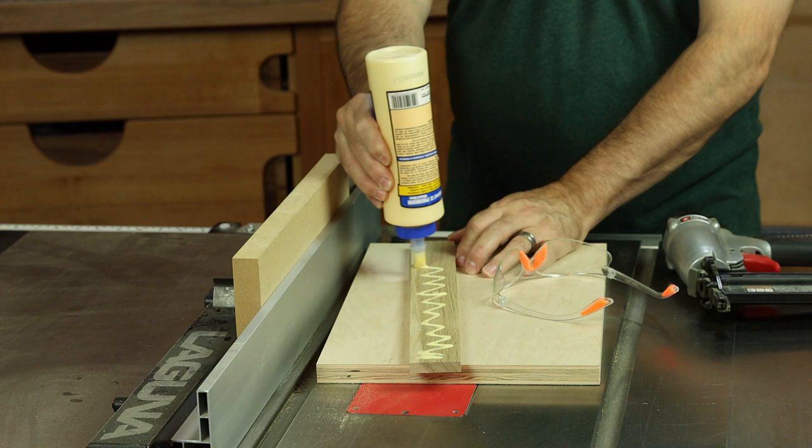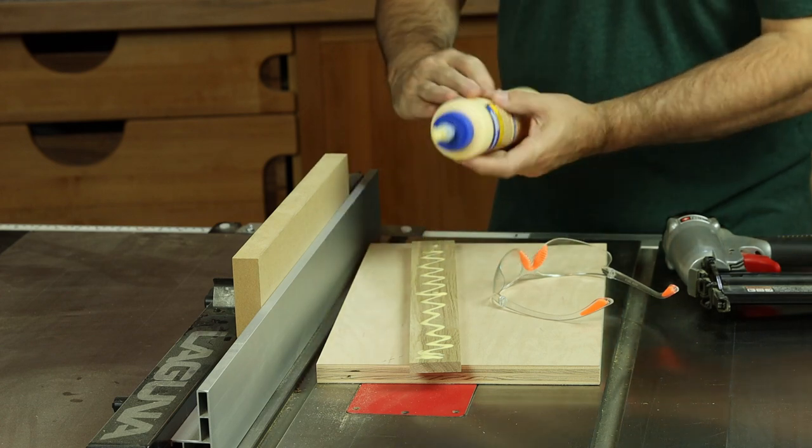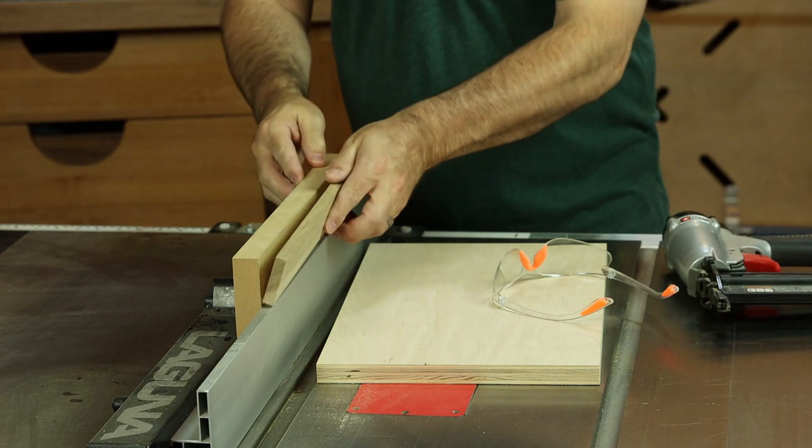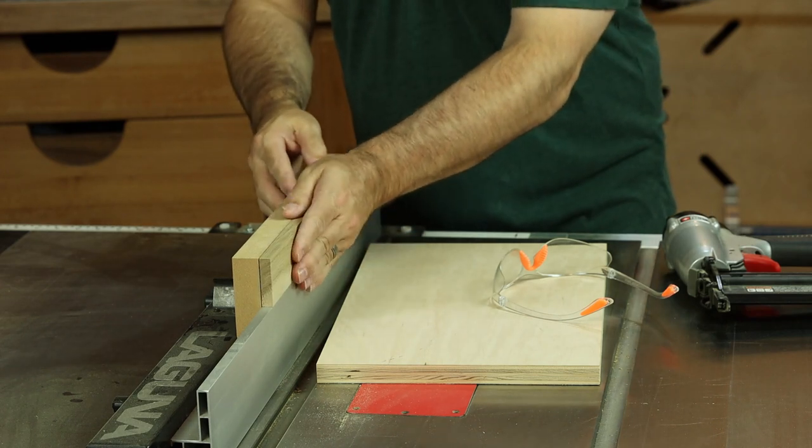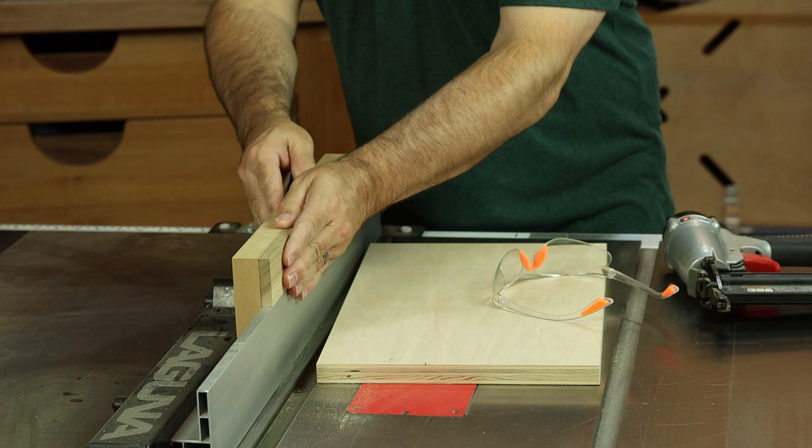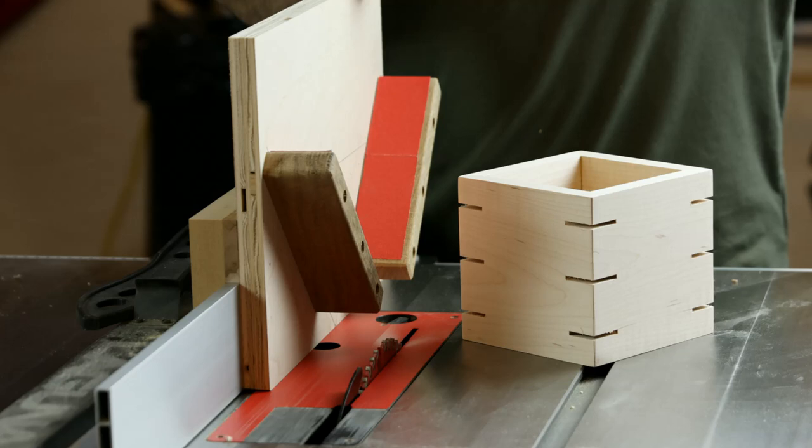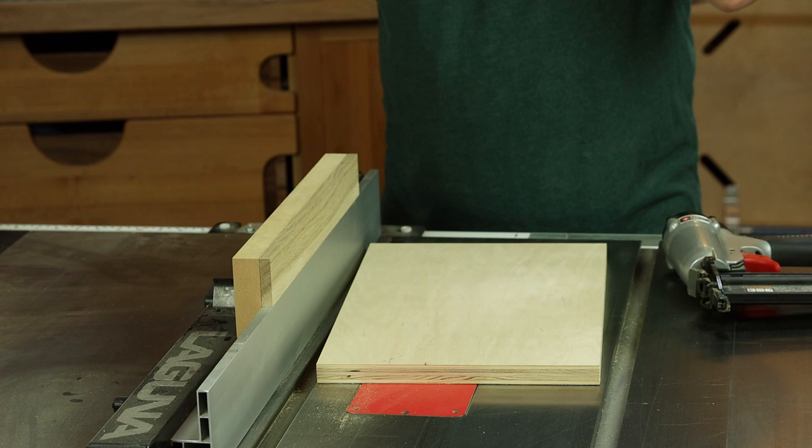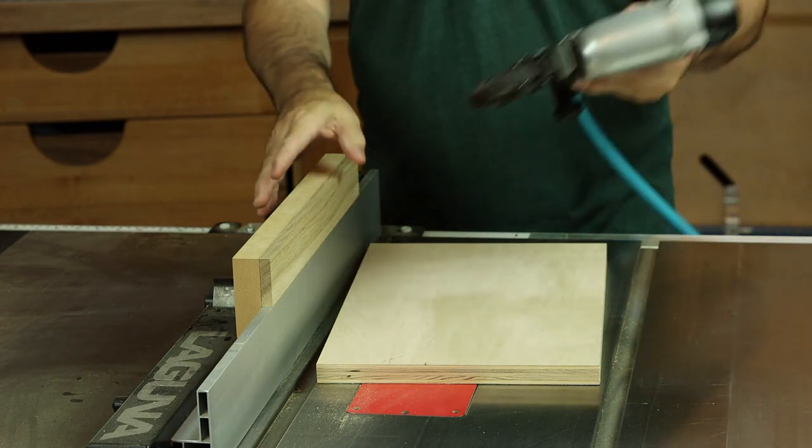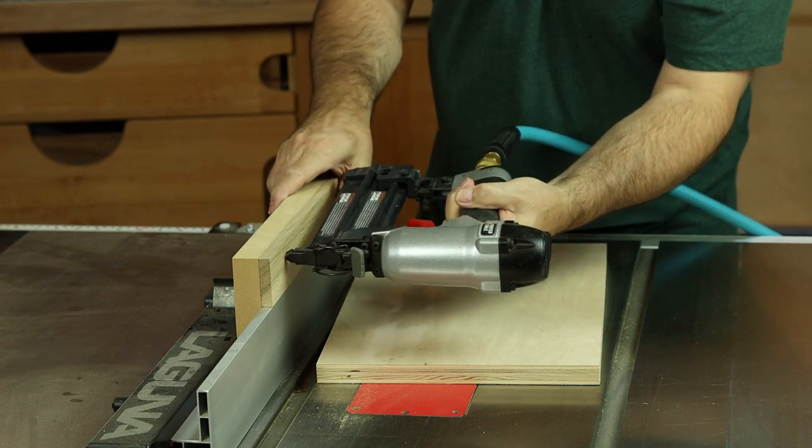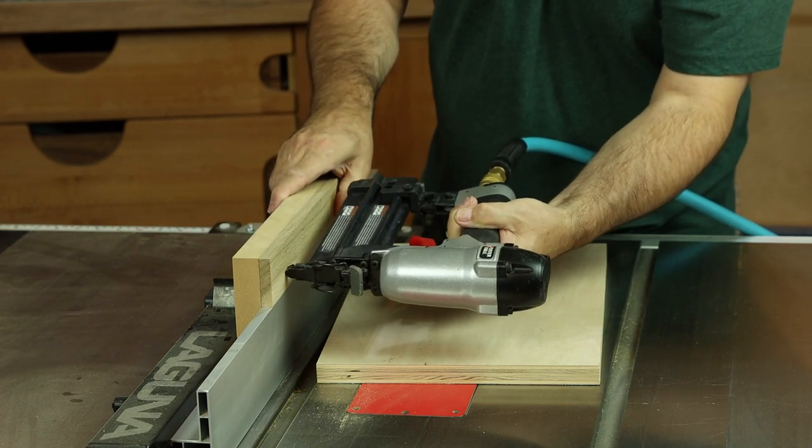So we'll go ahead and glue the fence components together and temporarily Brad nail them in position and if some of this looks familiar it should because this is the same base that we use for our recent jig which was a splining jig for the table saw and I think it's a great blueprint for any jig you might want to build with a high-low fence. And so we'll tack that spacer in position just make sure we're flush here and get that tacked away. One inch Brad nails.